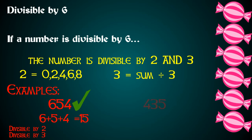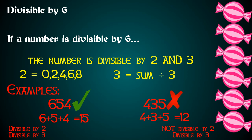What about 435? 435 does not end in 0, 2, 4, 6, or 8 — it's not an even number, so it's not divisible by 2. If we add up the sum of the digits, 4 plus 3 plus 5, we get 12. That's divisible by 3. However, because the number is not divisible by both 2 and 3, that means it's not divisible by 6.